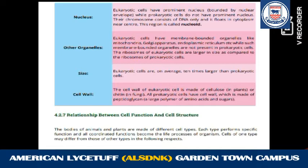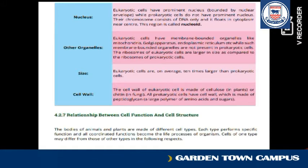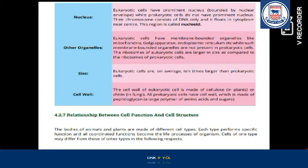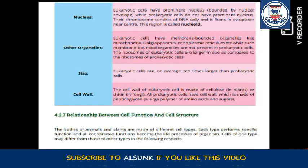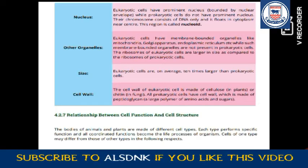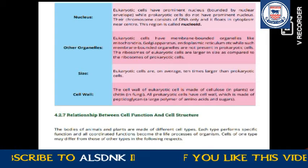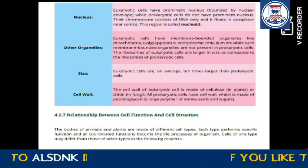The bodies of animals and plants are made of different types of cells. Each type performs specific functions, and all coordinated functions become the life processes of the organism. We need to gather all the cells and whatever functions they are performing — we say that these are the life processes. Cells of one type may differ from those of other types in the following respects.